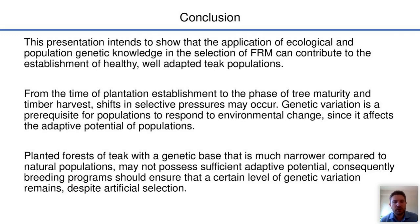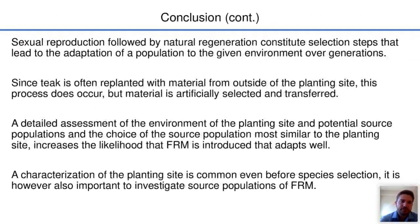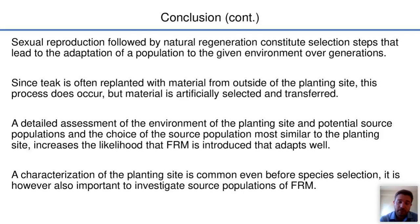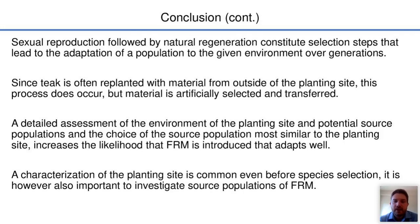Consequently, breeding programs should ensure that a certain level of genetic variation remains despite artificial selection. Sexual reproduction followed by natural regeneration constitutes selection steps that lead to the adaptation of a population to a given environment over generations. Teak is often replanted with material from outside the planting site, so this process does not occur and material is artificially selected and transferred. A detailed assessment of the environment of the planting site and potential source populations, and the choice of the source population most similar to the planting site, increases the likelihood that forest reproductive material that adapts well is introduced.